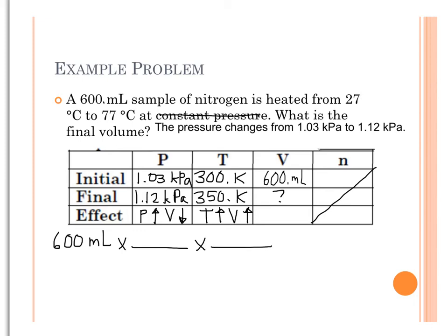Pressure, the pressure went up. As a result, the volume needs to go down, so I need this factor to be something less than one. Something that will make my 600 milliliters get smaller when I multiply it by 600.